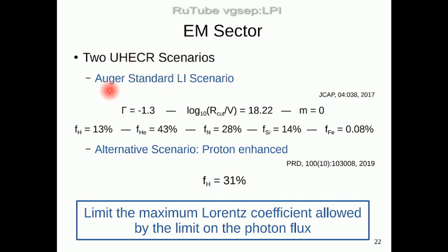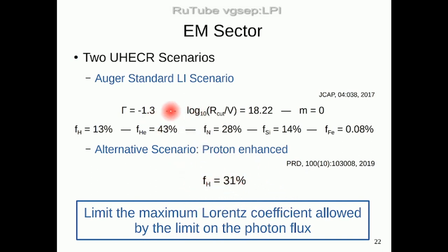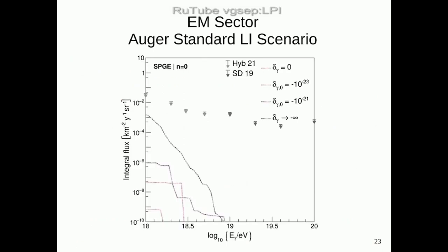For the electromagnetic sector, we tested two scenarios. The first — the Auger standard Lorentz invariance scenario — uses parameters calculated from Auger data: the spectral index, the rigidity cutoff, the source evolution, and the fraction of each primary leaving the source, which best explain the Auger data under Lorentz invariance. We also allow an alternative scenario called 'proton enhanced,' which is the maximum amount of proton allowed in the fit that still reproduces the Auger data.